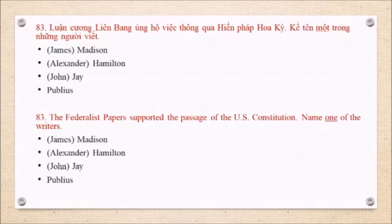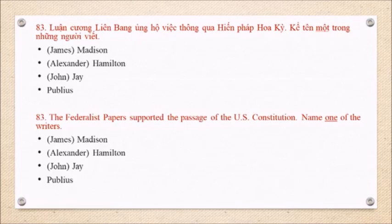Question 83: The Federalist Papers supported the passage of the U.S. Constitution. Name one of the writers. James Madison. Alexander Hamilton. John Jay. Publius.